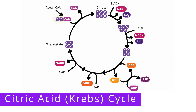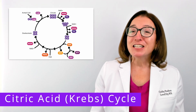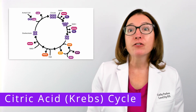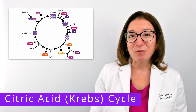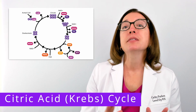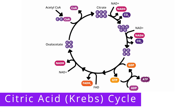During this cycle, the acetyl group from acetyl-CoA is attached to a four-carbon molecule called oxaloacetate to form a six-carbon citrate molecule. That citrate molecule is then oxidized in a series of steps. Most microbiology classes do not expect you to memorize every step of the cycle, but you do need to know what enters and what comes out. For each acetyl-CoA molecule that goes through the citric acid cycle, we get one ATP, three NADH, one FADH2, and two carbon dioxide molecules.